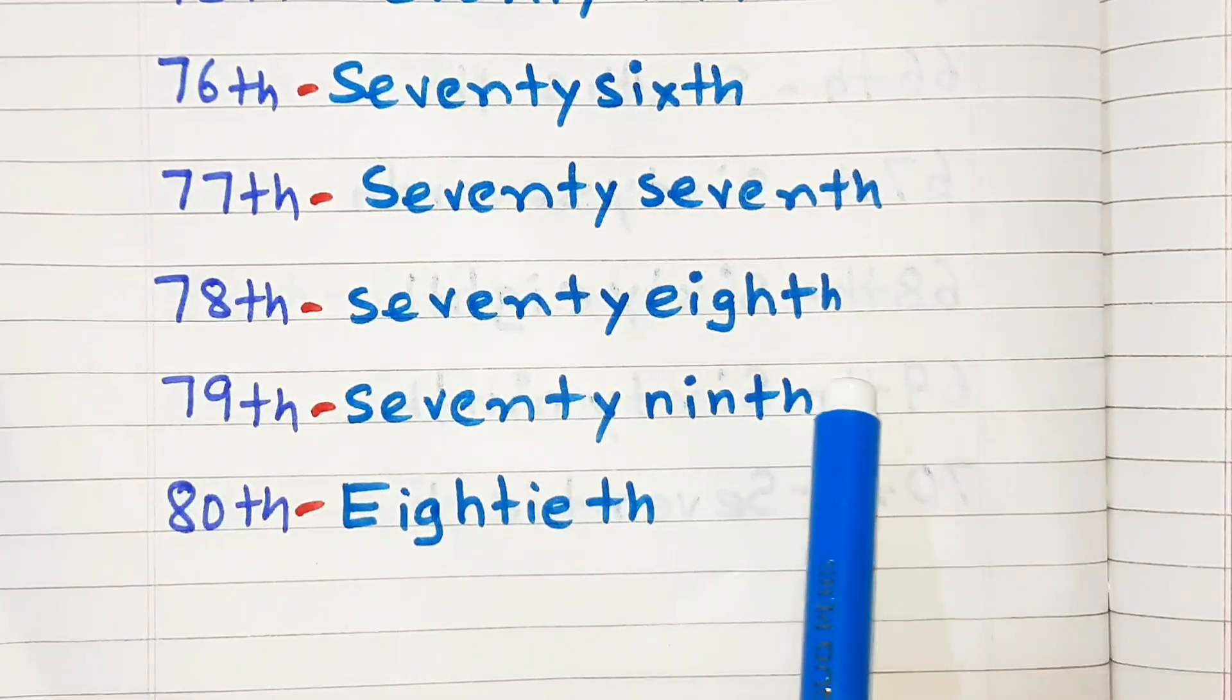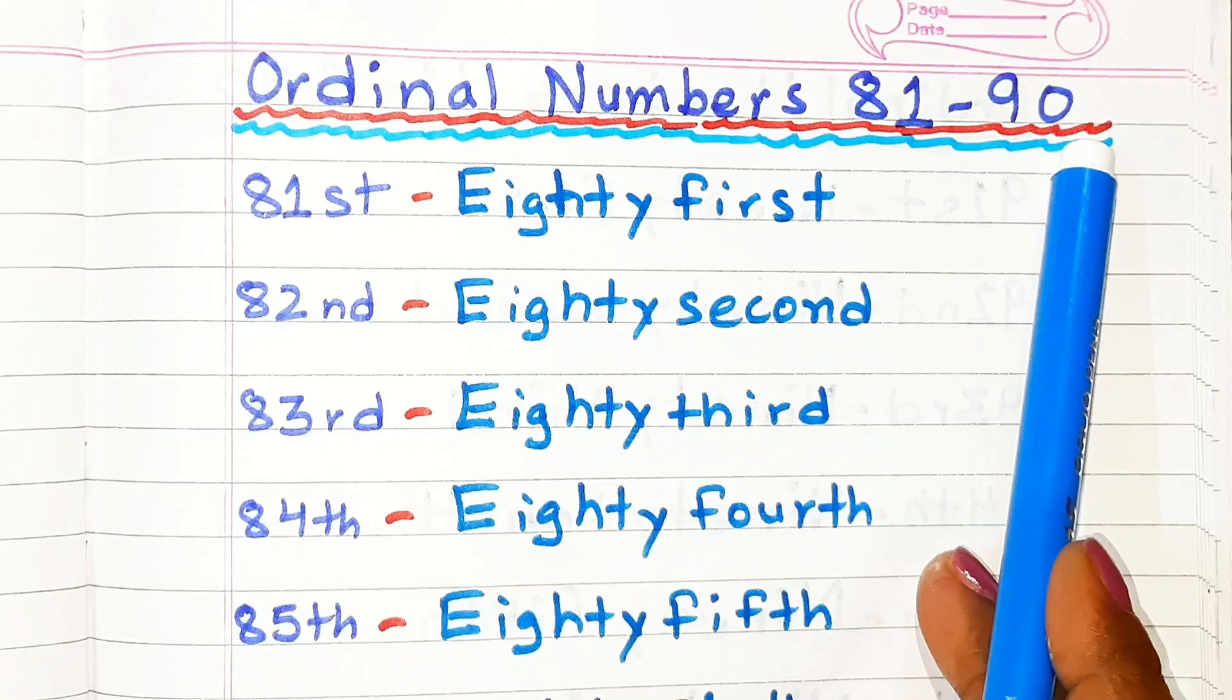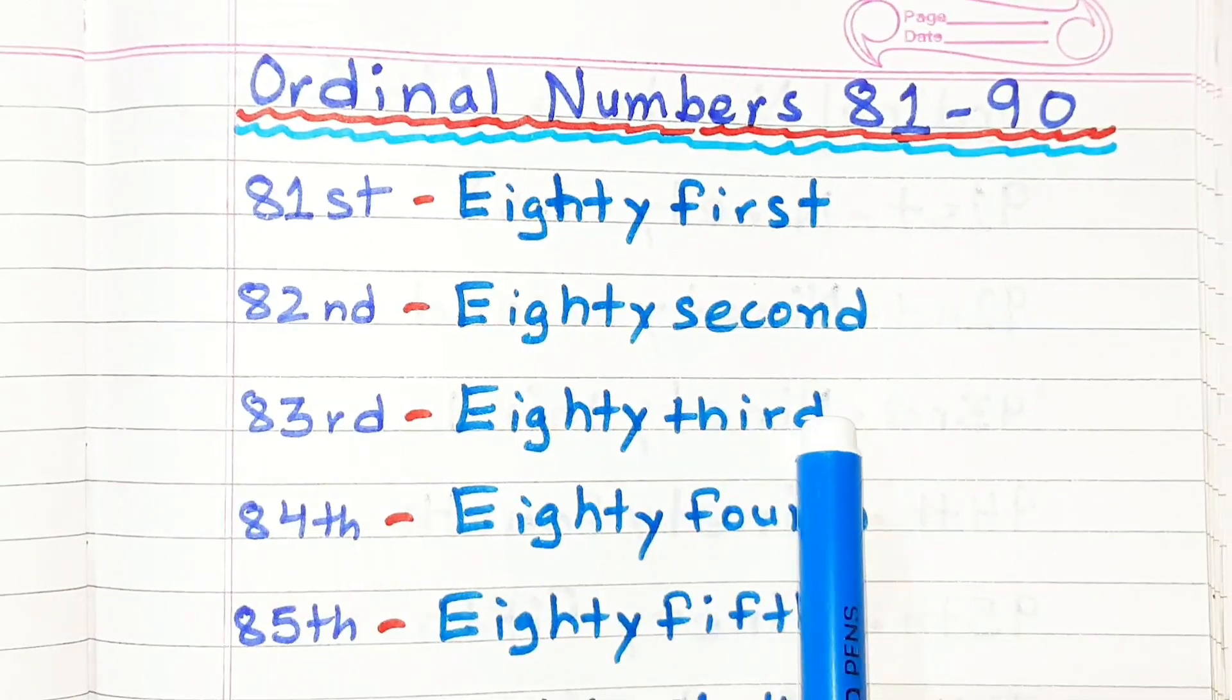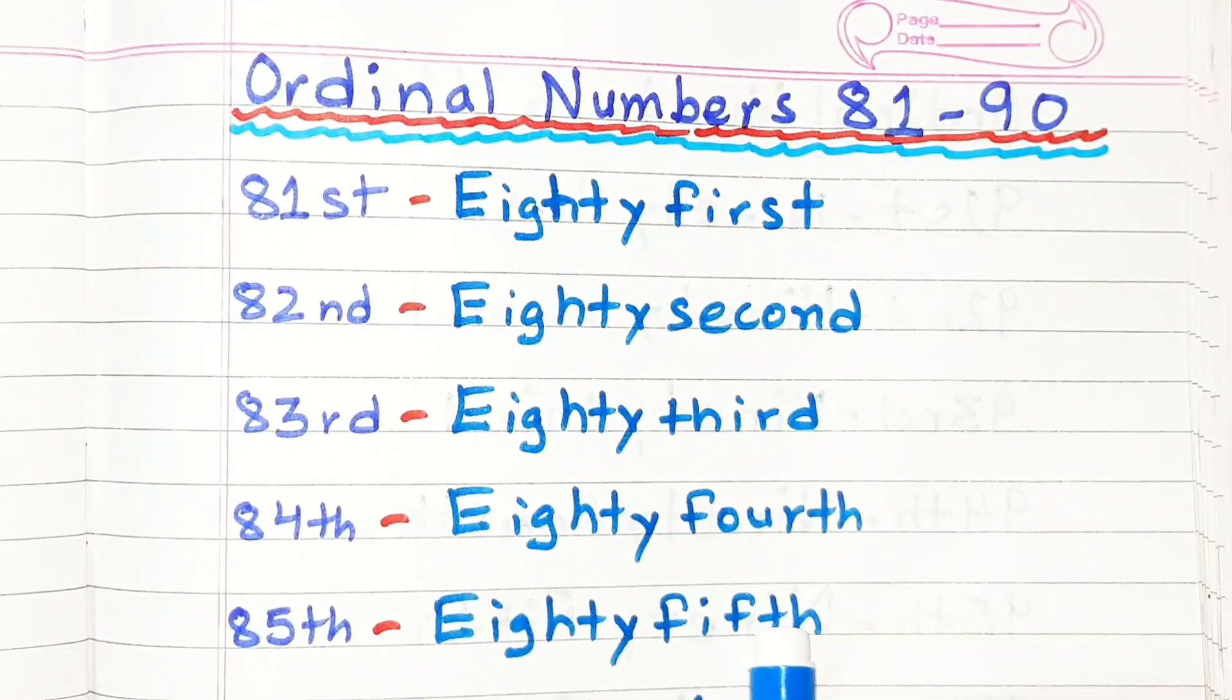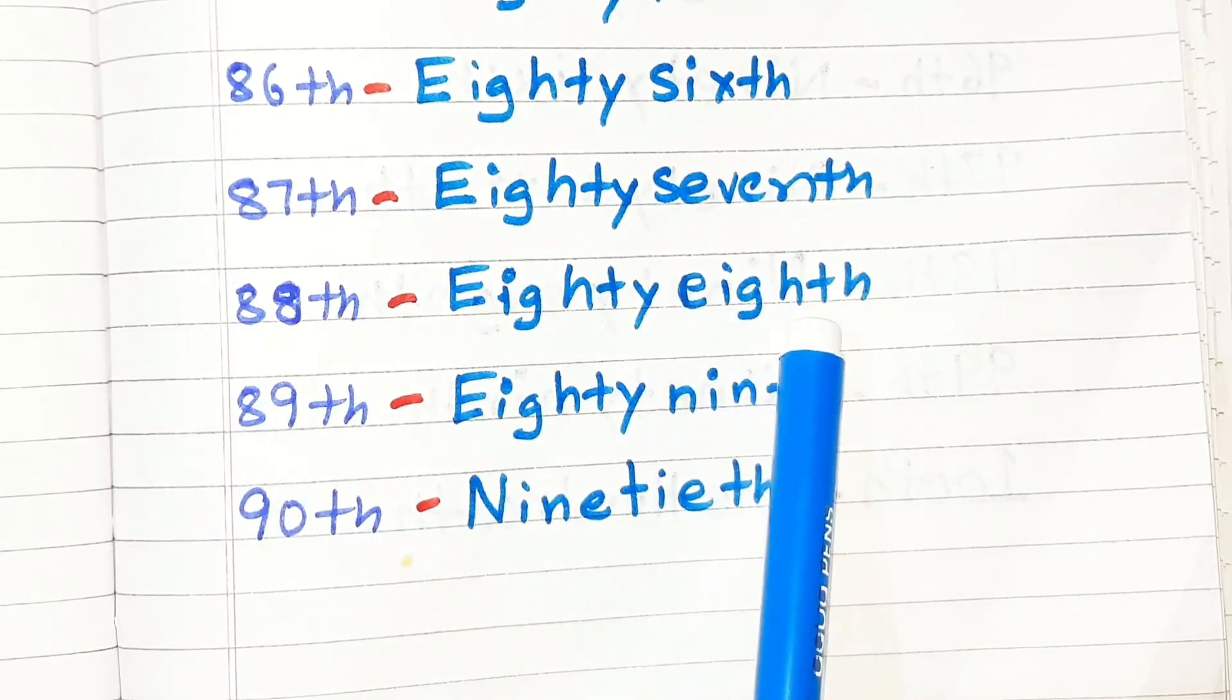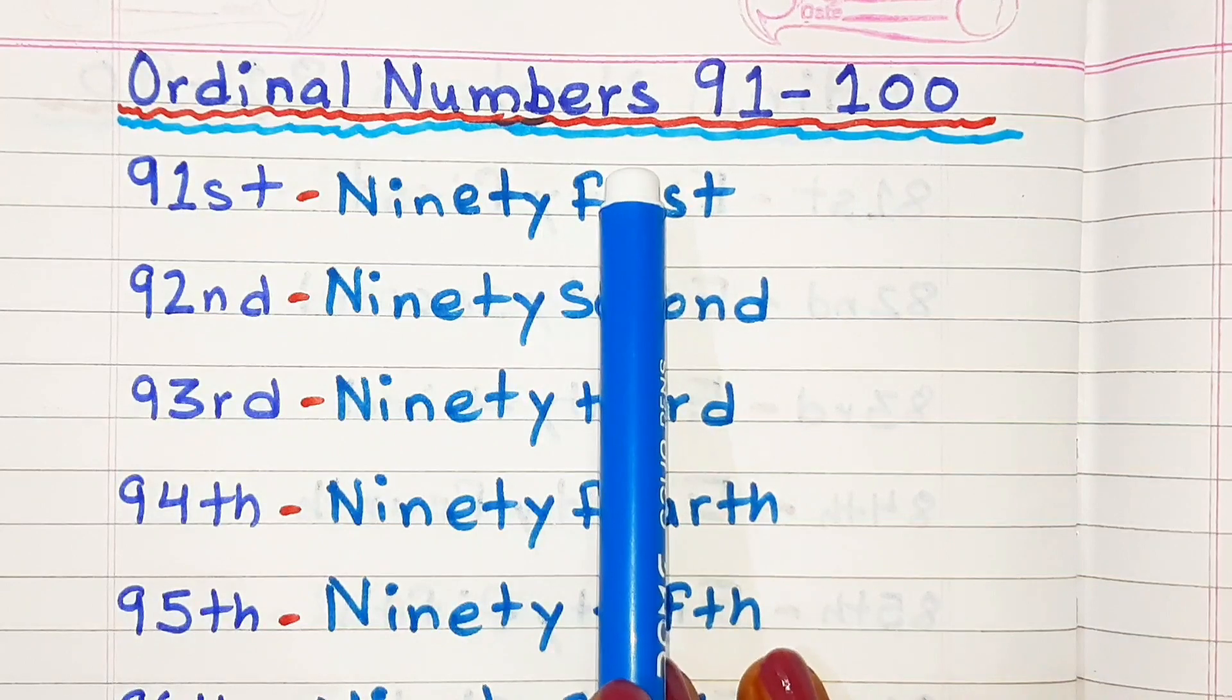Ordinal Numbers Eighty-one to Ninety: Eighty-first, Eighty-second, Eighty-third, Eighty-fourth, Eighty-fifth, Eighty-sixth, Eighty-seventh, Eighty-eighth, Eighty-ninth, Ninetieth.